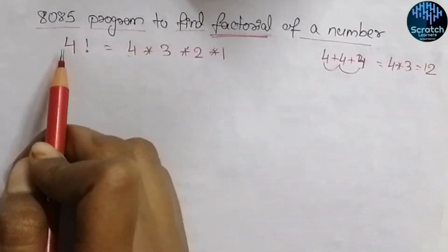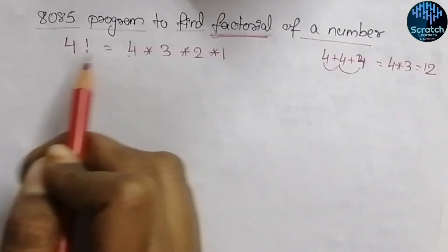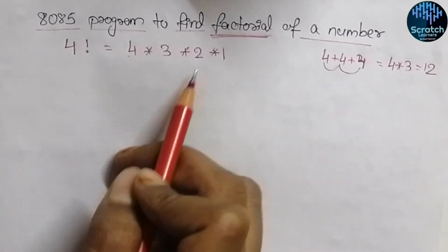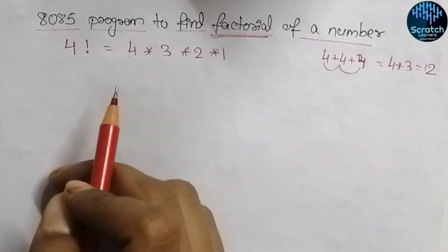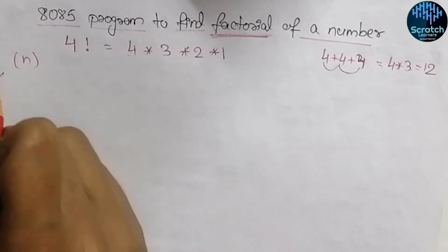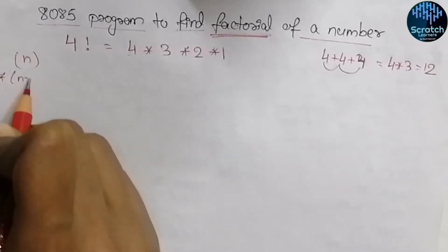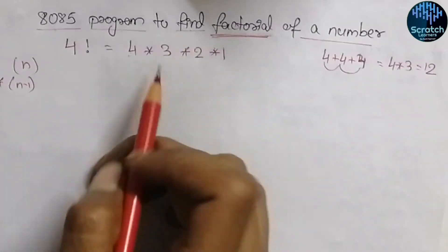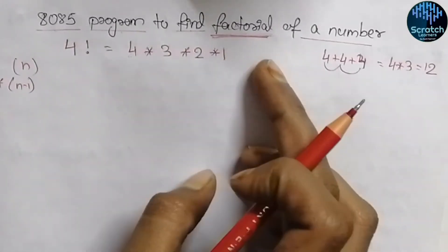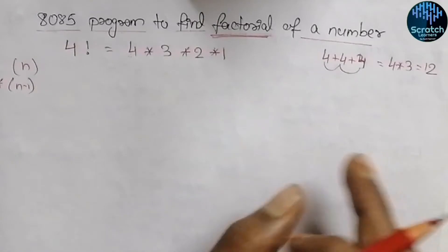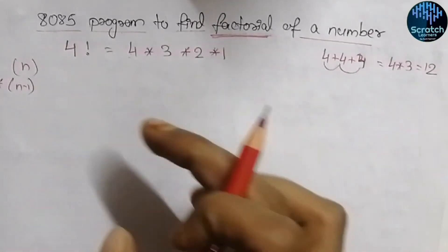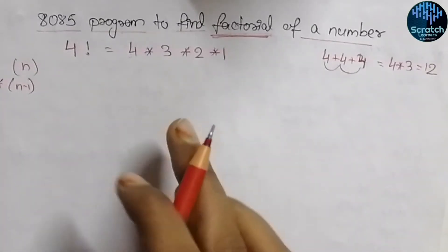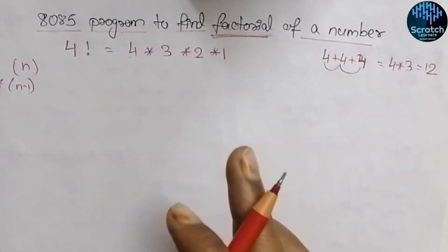To find the factorial of four we perform multiplication three times. So to find the factorial of N we need to perform multiplication N minus one times. Since we need to multiply many times, we will write the multiplication code into a subroutine and call that subroutine from our main program N minus one times.